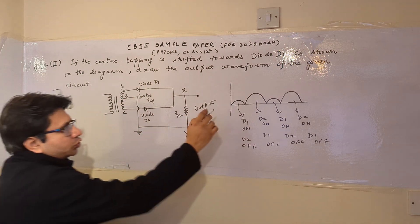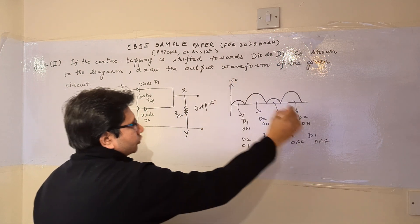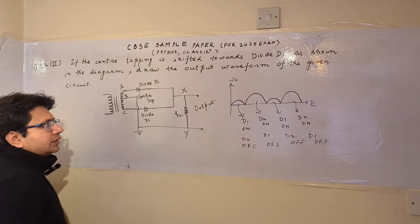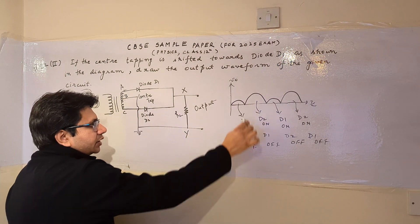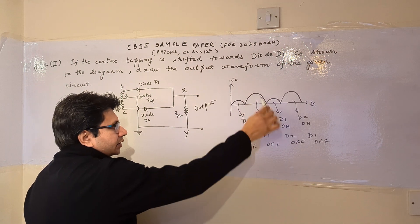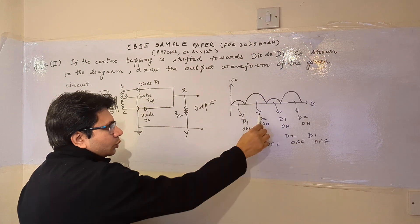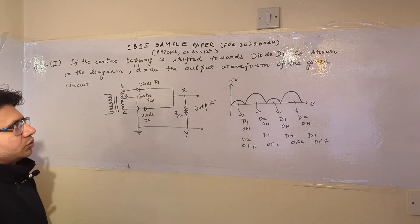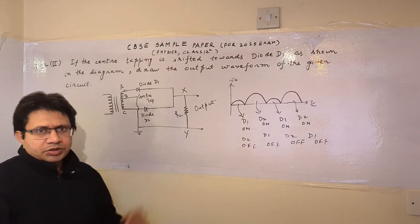That's why when diode D1 conducts, we get a lesser output voltage. This is the output voltage waveform with respect to time. So we get a lower height when diode D1 is on and D2 is off, and we get a higher height, higher amplitude of the output when D2 is on and D1 is off.